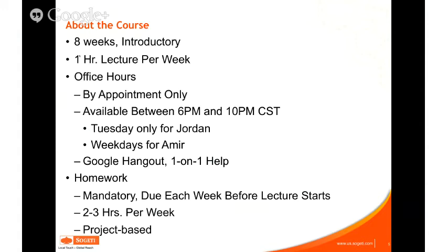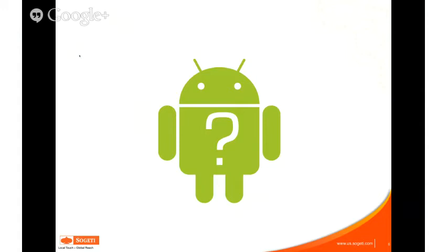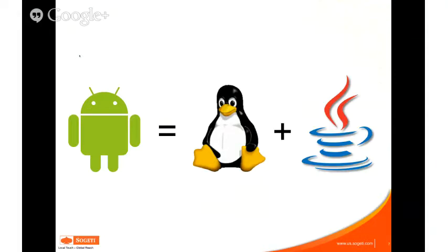The first question is: what the heck is Android? There are 800 different smartphones running Android, all looking and behaving differently. At its core, Android is an operating system based on a Linux kernel, and on top of that you're running Java. Everything we code as an Android application is a Java application that gets installed on the phone as basically a zip file, and it runs in a virtual machine on the phone with access to all the hardware.